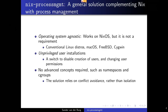You can also use it for unprivileged user installations. The reason why that is possible is because I built in a global switch that allows you to disable the creation of users and changing user permissions. As a non-root user, you typically don't have the permissions to do this, and by disabling it, you can basically just run any process you want without restrictions. The final key concept is that it doesn't require any advanced concepts like namespaces and cgroups that are commonly used for containers. The solution relies on conflict avoidance rather than isolation, which is good for portability, as I'll explain later in this presentation.